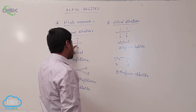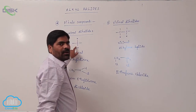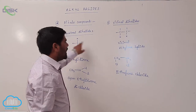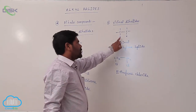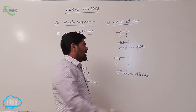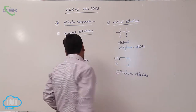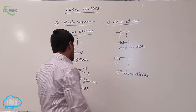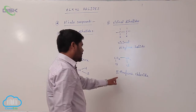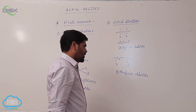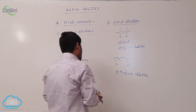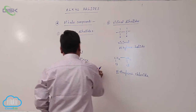So if two halogens are present on the same carbon atom, it is known as geminal dihalide. If two halogens are on adjacent carbon atoms, it is known as vicinal dihalide. This is known as ethylidene dichloride, and this is known as ethylene chloride.